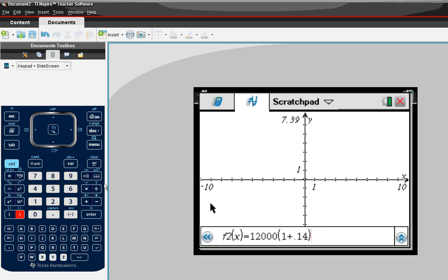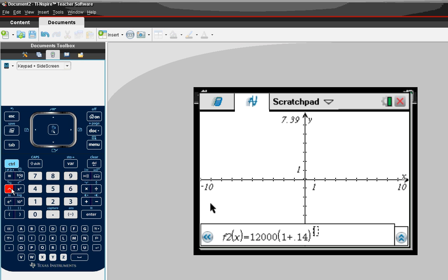And then my exponent was t when I wrote it down, but the calculator understands it as x. So I'll raise it to the power of x. Hit enter.